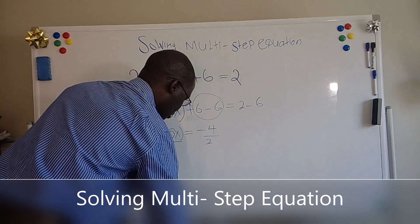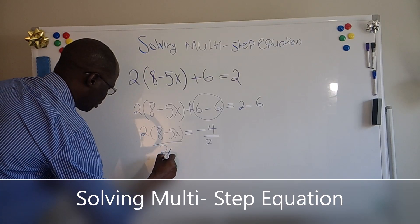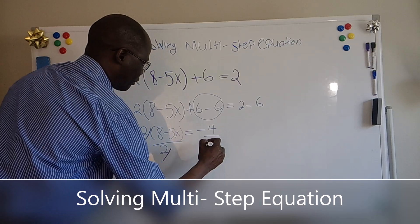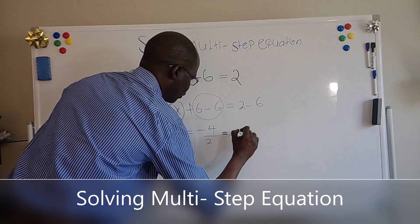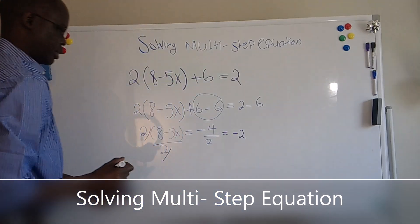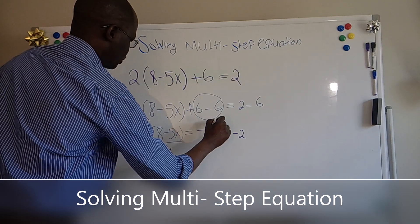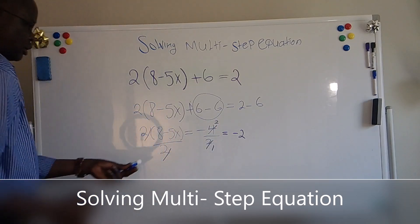And as you can see, 2 is going to go, and minus 4 divided by 2 equals minus 2. Because 2 divided by 2 is 1, 2 divided by 2 is 1, so we have 2.